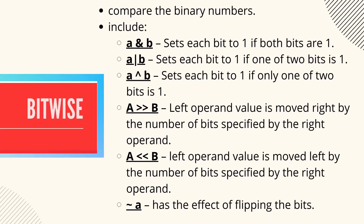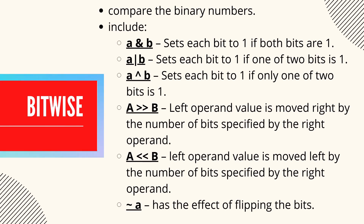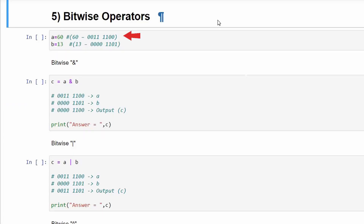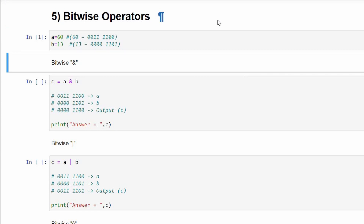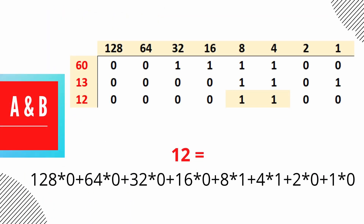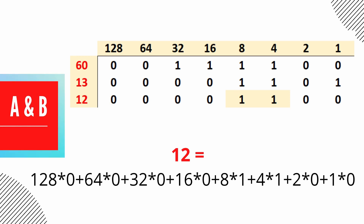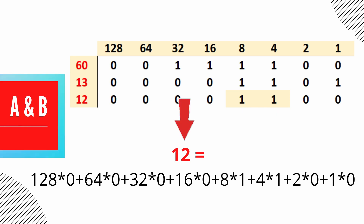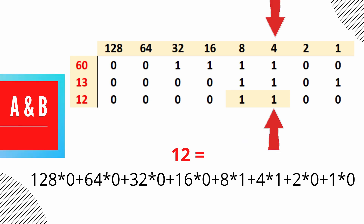Next is the bitwise operator. These operators are used to compare binary numbers. The bitwise AND sets each bit to 1 if both bits are 1. With a equals 60 and b equals 13, c equals a AND b gives output 12. In binary, 60 is represented as 00111100 and 13 as 00001101. AND only returns 1 where both digits are 1 — in the third and fourth positions from the right — giving: 8×1 + 4×1 = 12.